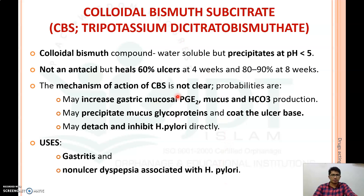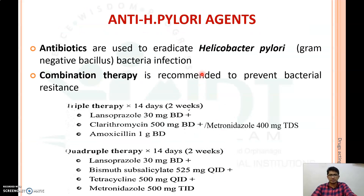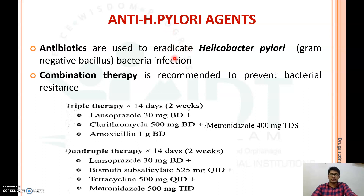Now coming to the last category of drugs used for peptic ulcer treatment: anti-H. pylori agents. These are antibiotics used to eradicate Helicobacter pylori, a gram-negative bacillus that causes infection in the gastrointestinal tract, which may lead to peptic ulcer. These agents are typically used as combination therapy — either triple therapy or quadruple therapy — both administered for 14 days.